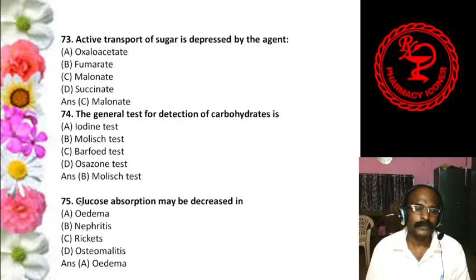Mutarotation is the change in specific rotation on standing of a glucose solution. At first one optical rotation is observed, and after standing, it changes to another value — this change in optical rotation is called mutarotation.